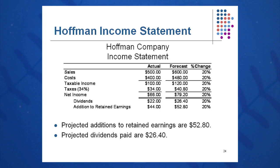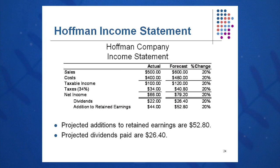100 times 1.2 gives taxable income of $120. I can also get that by taking sales minus costs — same number. Their tax rate is 34%, so we take 34% of $120 and come up with taxes of $40.80, leaving net income of $79.20. That $79.20 should be 20% higher than last year's value of $66.